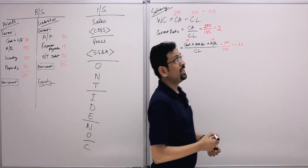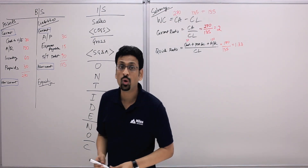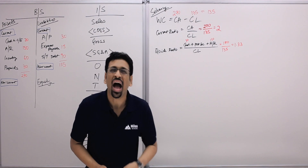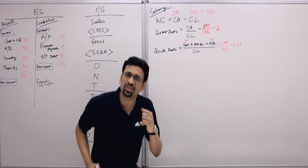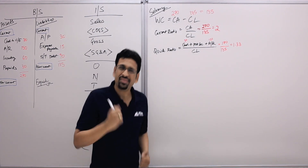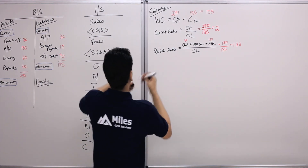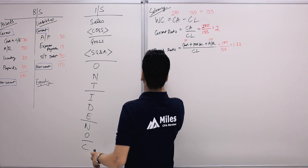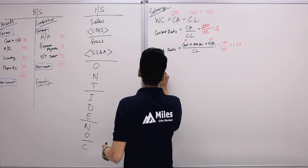The next set of ratios we're going to look at is activity ratios — how active is the business? Does it jog, does it exercise, does it run? So we have activity ratios.